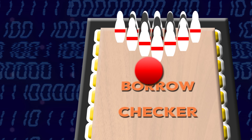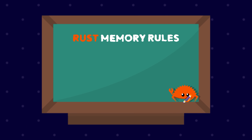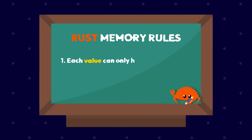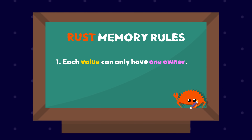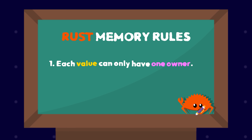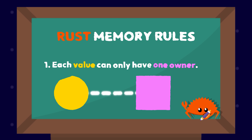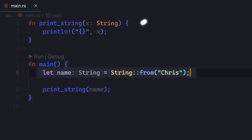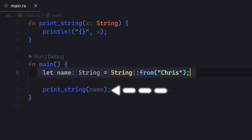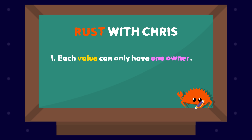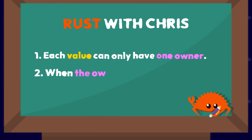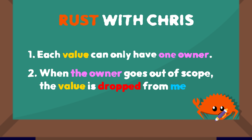If you violate a rule, Rust won't compile your program. So what are these rules? There are two essential ones. First, each value in Rust has a variable that's called its owner. It's responsible for the value, and very importantly, there can only be one holder or owner of each value at a time. Here, I have a string, 'Chris' — currently the variable name is the owner. I can pass that value to my function, printString, but at that point the function now owns the value. And that brings us to the second rule: when the owner goes out of scope, the value is dropped from memory.